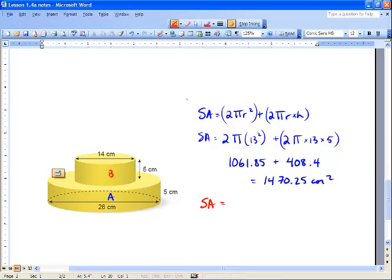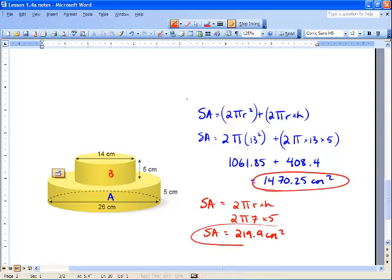So surface area. And we don't need to do our top and bottom. So we're just going to go 2 times pi times R times H. And we get 2 times pi. Our R is half of 14, which is 7. And our height is 5. So our surface area is going to be 219.9 centimeters squared. We're then going to add these two numbers together and we get a total surface area of 1690.1 centimeters squared.